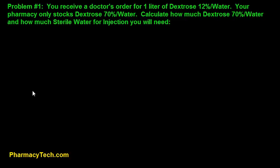Problem number one. You receive a doctor's order for one liter of dextrose 12% in water. Your pharmacy only stocks dextrose 70% in water. Calculate how much dextrose 70% water and how much sterile water for injection you will need.